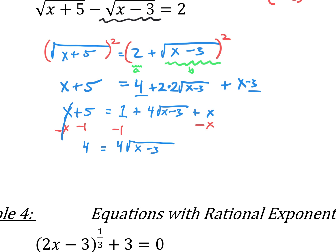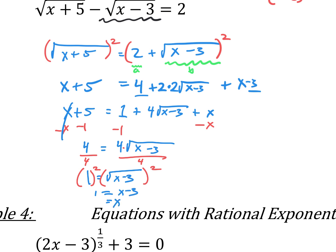Don't square yet — first divide by 4. That leaves 1 equals the square root of x minus 3. Now we can simply square both sides to get rid of the square root, giving 1 equals x minus 3. Add 3 to both sides and x equals 4.